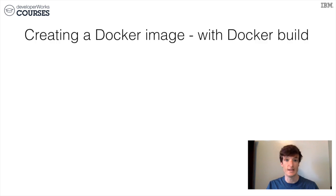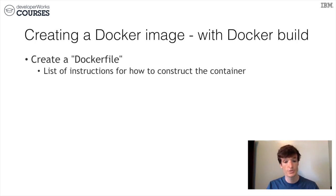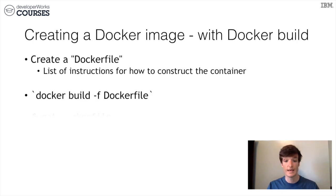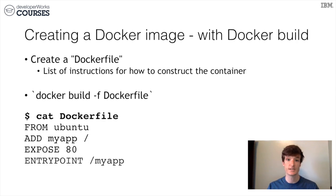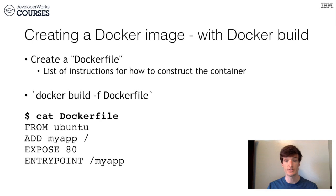So we want to create an image — how do we do it? To create an image, we're going to create something called a Dockerfile, which is a file that contains a set of instructions to build our image. Once we have our instructions written in a Dockerfile, we pass it to the docker build command and the Docker engine will build our image. Below is an example Dockerfile for an Ubuntu image. We can see that we're inheriting from the base Ubuntu image, adding our application, exposing a port, and specifying the entry point — which is the starting process executed when the container starts.